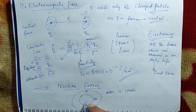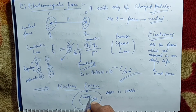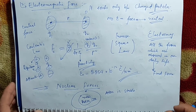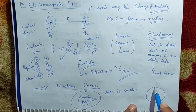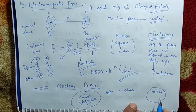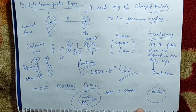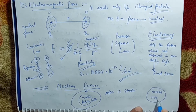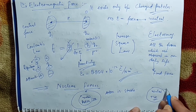Inside the nucleus you see only two kinds of things: either neutrons or protons. Neutron is neutral — a neutral particle with no charge. The other kind of particle is the proton, which is positively charged. So overall, the nucleus is positively charged.